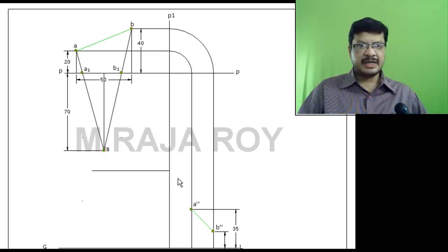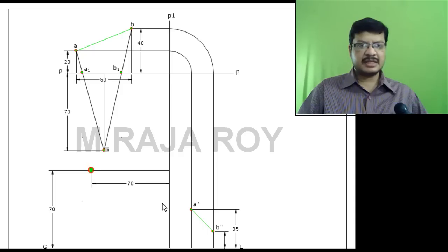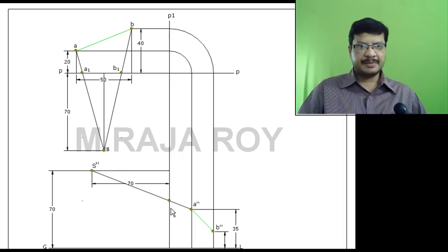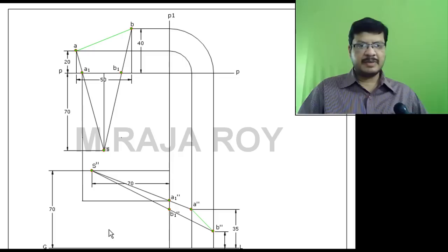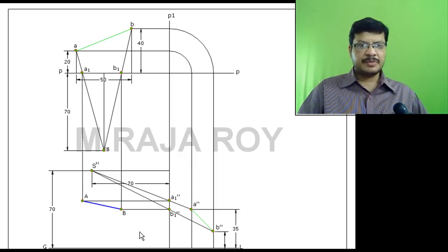Now draw the side view of the station point. From this side view you can see the height as well as the distance from the picture plane — height is 70mm and distance from the picture plane is 70mm. This point is S double dash. Draw a line from S double dash to A double dash — the intersection point with the profile plane is A1 double dash. Draw a line from S double dash to B double dash — the intersection point with the profile plane is B1 double dash. Draw a projector from A1 and a locus from A1 double dash — this is capital A. Projector from B1 and locus from B1 double dash gives capital B. The line joining capital A and capital B is the perspective projection of the given line AB. This is the top view and side view method.